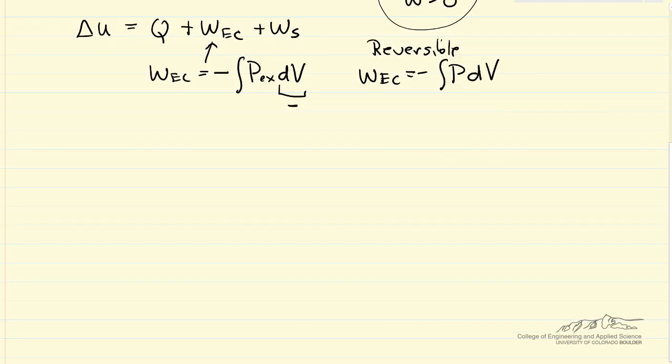So one common case might be a constant pressure process. And then delta U, again we're talking about a closed system, equals Q. At constant pressure, we can bring it outside the integral sign, and I'm going to write this as constant pressure and reversible, so this is the pressure, for example, of the gas inside delta V, and I'm doing the case where the shaft work is zero.